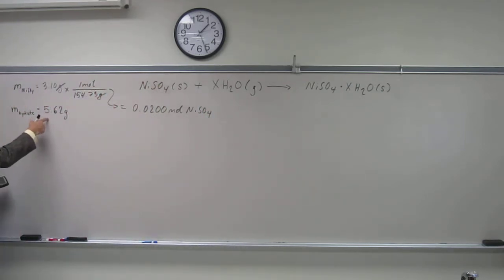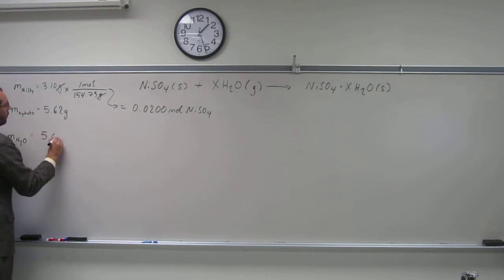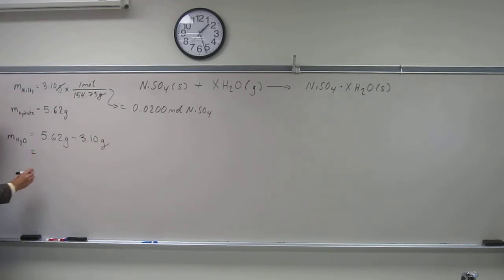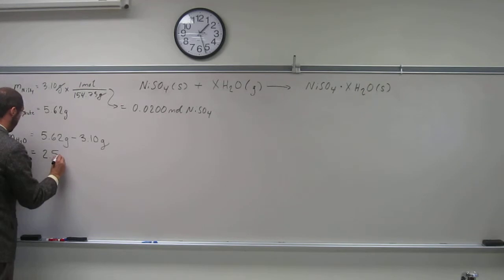The mass of the hydrate is 5.62 grams. The mass of the nickel(II) sulfate is 3.10 grams. We should be able to figure out what the mass of the water is from those two numbers, right? The mass of the water is going to be 5.62 grams minus 3.10 grams, giving us 2.52 grams of water.